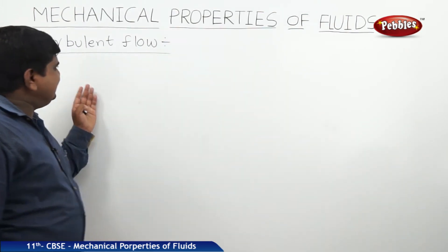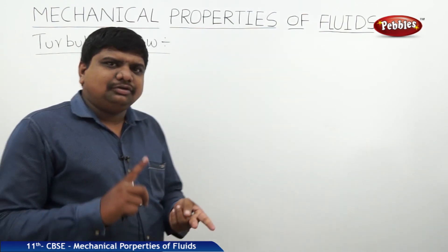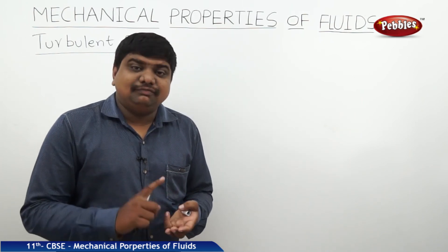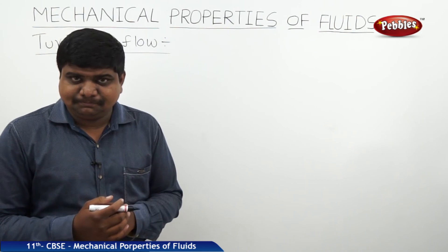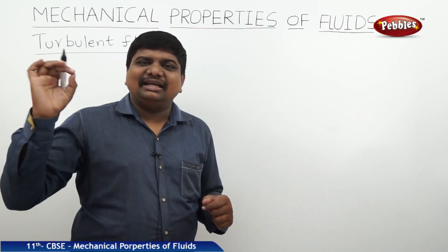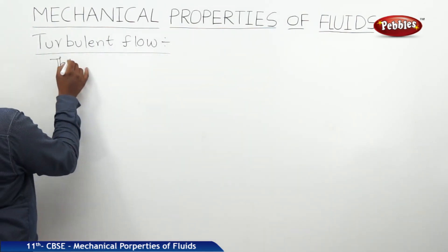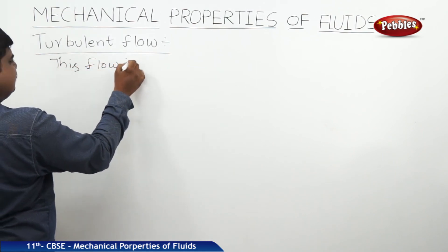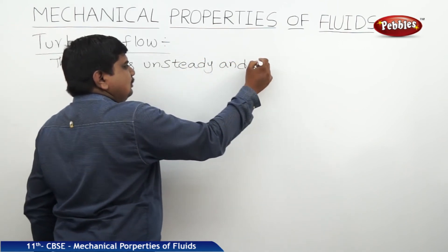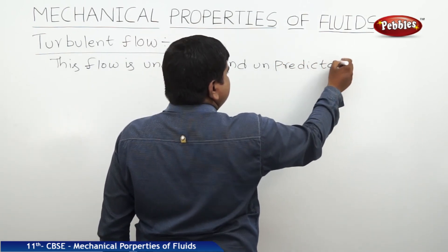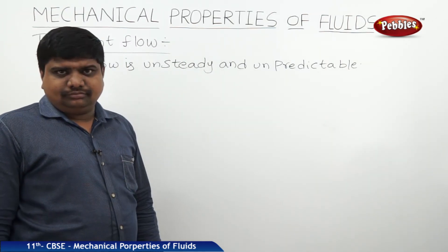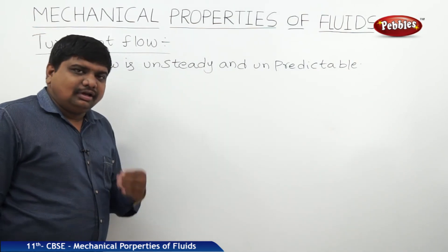The next concepts are streamline flow, tube flow, and turbulent flow — these are the different types of motion of a fluid. Turbulent flow is a simple unsteady flow which is unpredictable. Floods are the best examples of turbulent flow.